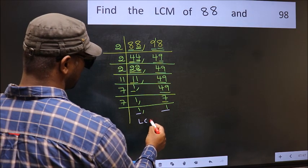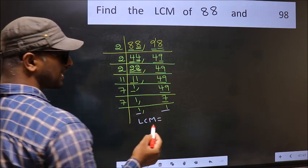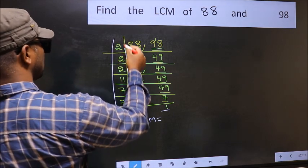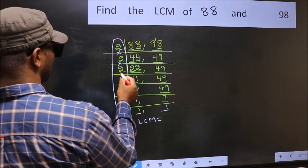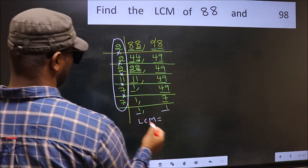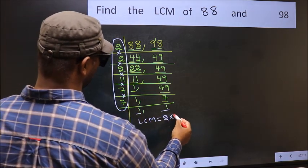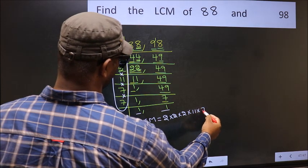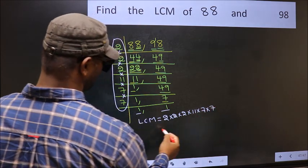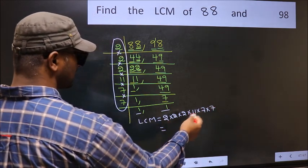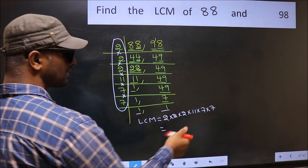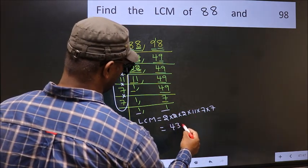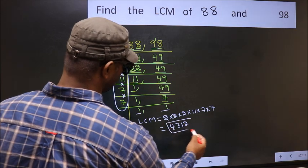So our LCM is the product of these numbers: 2 × 2 × 2 × 2 × 11 × 7 × 7. When we multiply these numbers, we get 4312. That is our LCM.